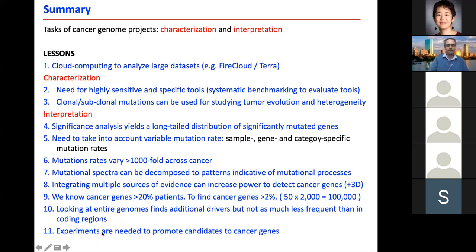And eventually I didn't talk about experiments, but all of what we find in these statistical tools are candidate cancer genes. And then we need to actually perform the experiments to convince us that these mutations really promote the growth or delayed the death of cells to promote or drive cancer.